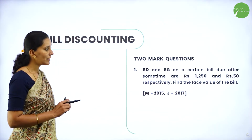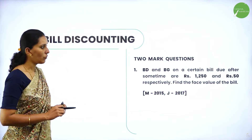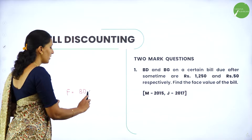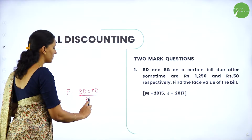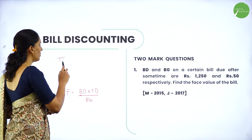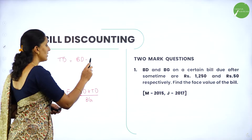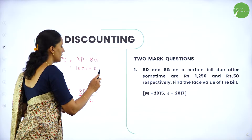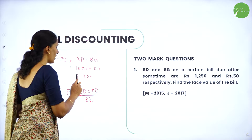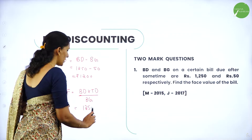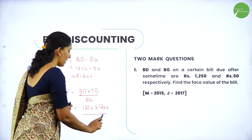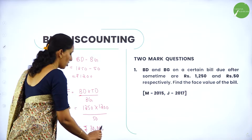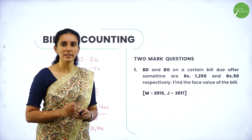From this question, banker's discount and banker's gain are given. To find the face value, we need true discount first. The formula is: face value = (BD × TD) / BG. True discount = BD − BG = 1250 − 50 = 1200. Substituting: face value = (1250 × 1200) / 50 = rupees 30,000. So the face value of the bill is rupees 30,000.